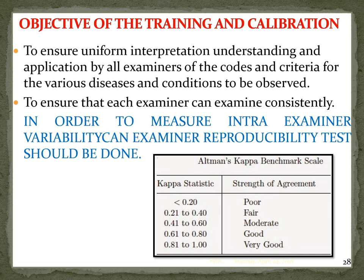The objective of training and calibration is to ensure uniform interpretation, understanding, and application by all examiners of the codes and criteria for various diseases and conditions to be observed, and to ensure that each examiner can examine consistently. To measure intra-examiner variability, an examiner reproducibility test should be done using kappa statistics.